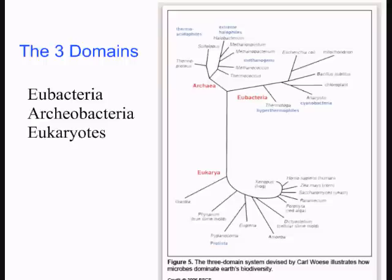There are actually two types of bacteria. There's eubacteria, which are true bacteria — what we typically think of as prokaryotes — with lack of organelles, lack of a nucleus, 70S ribosomes, and cell walls. But there's also archaeobacteria, which is a very small group of bacteria with special implications.